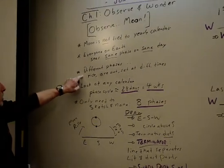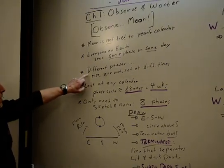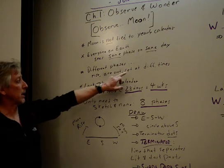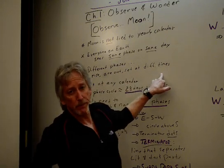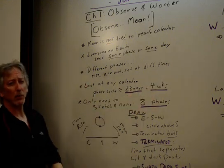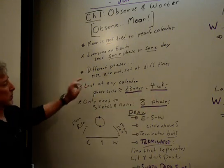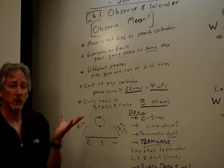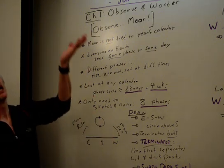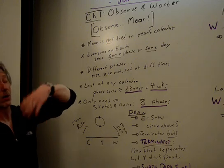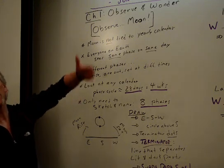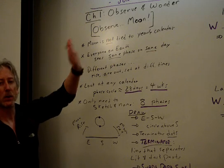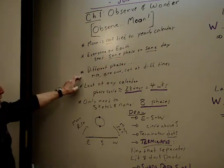The other thing you'll notice is that different phases rise, are above our horizon, and set at different times. Sometimes the moon is out all day, sometimes all night, sometimes in the morning, sometimes in the afternoon and into the evening, or later in the evening after midnight into the morning. So it varies.